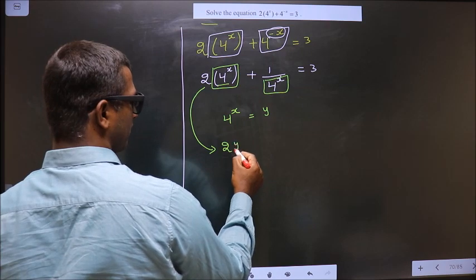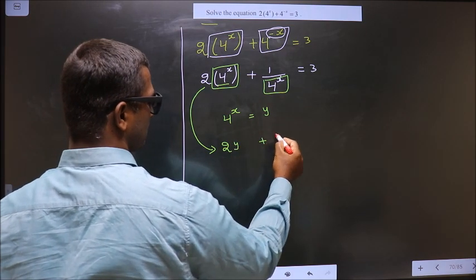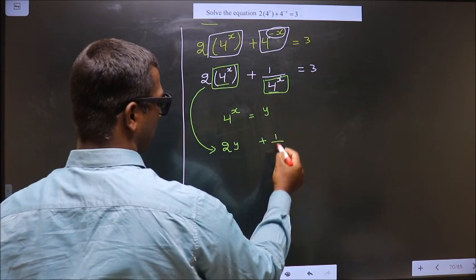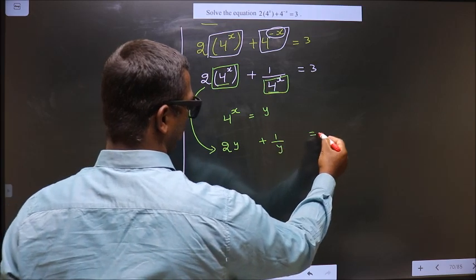3. Now you should remove the denominator y. For that, you multiply by y to each term, so here you...